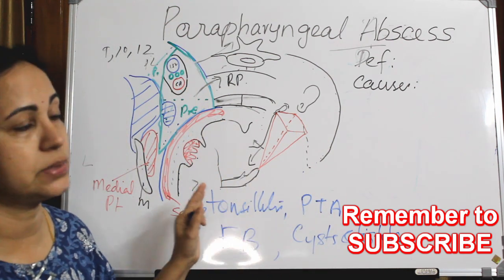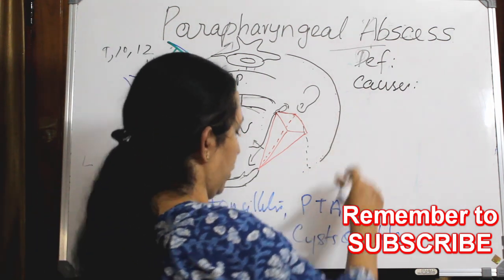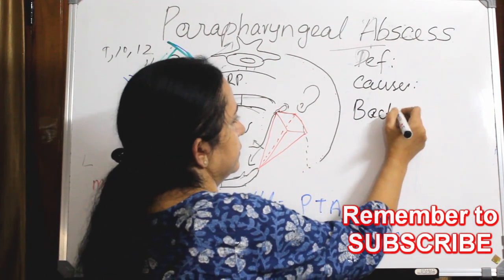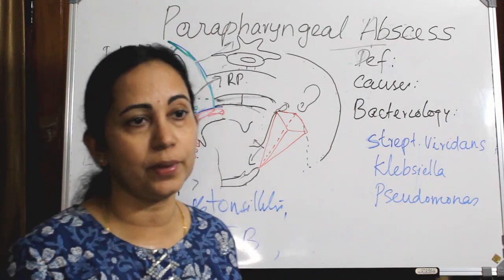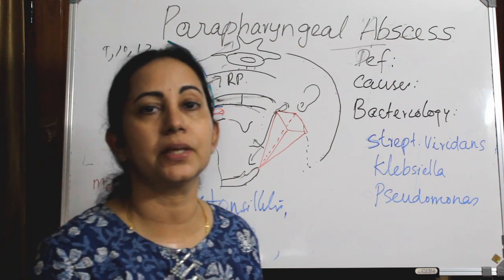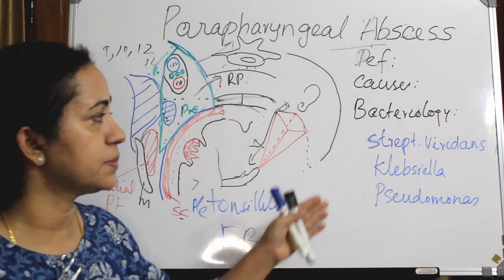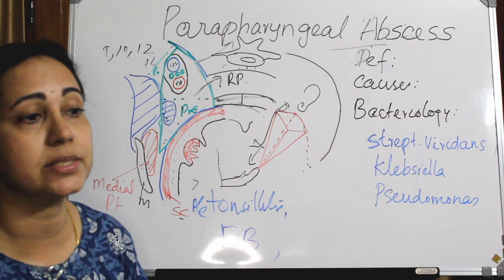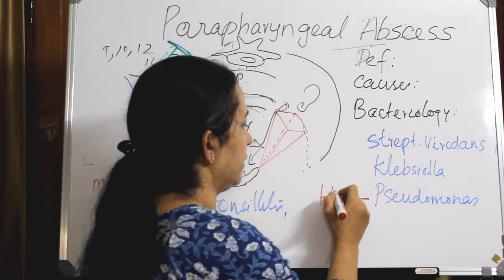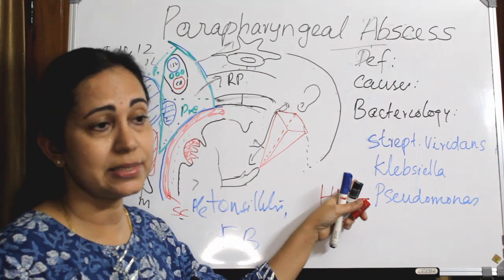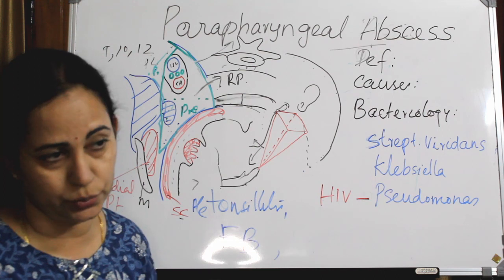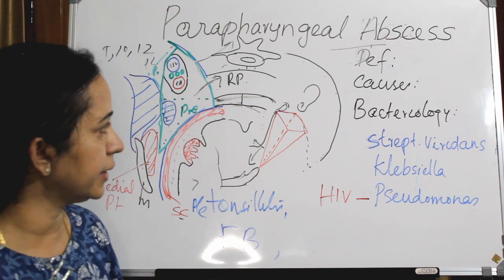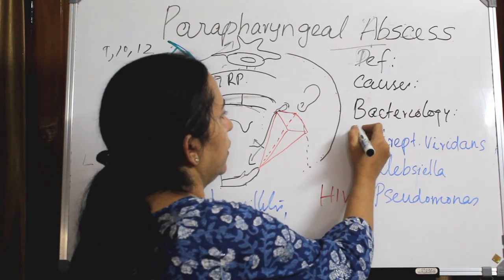Regarding bacteriology, parapharyngeal abscess is a polymicrobial infection — both gram-positive and gram-negative organisms can be causative. The most commonly seen organisms are Streptococcus viridans and Klebsiella pneumoniae. Pseudomonas aeruginosa is more commonly seen in association with HIV patients.